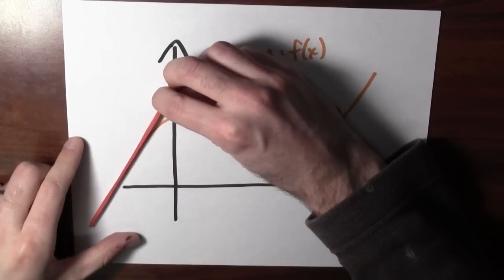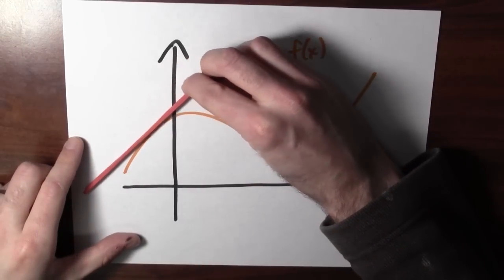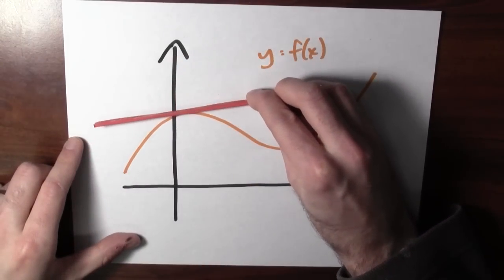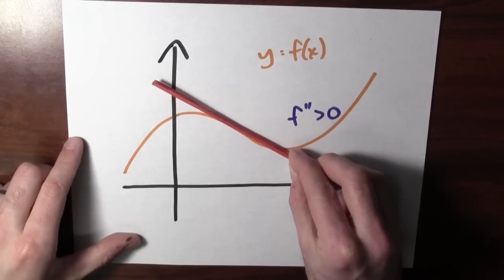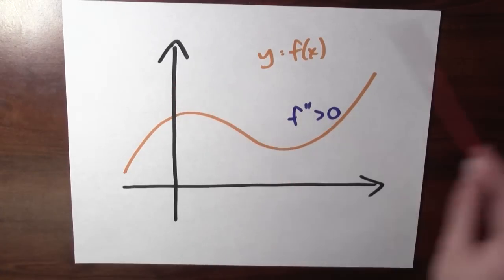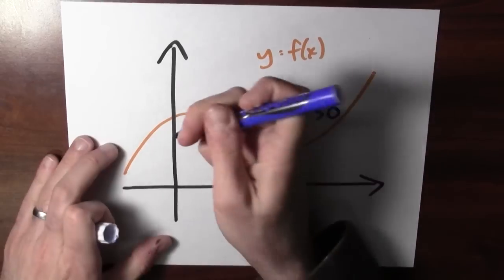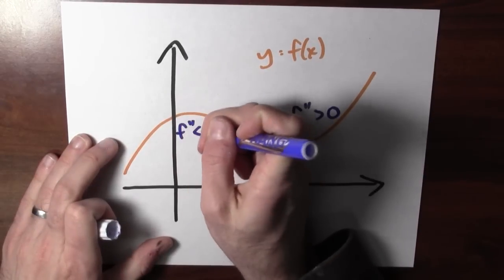The slope starts off pretty positive over here. And as I move this tangent line over, the slope is zero and now getting more and more negative. So in this part of the graph, the second derivative is negative.